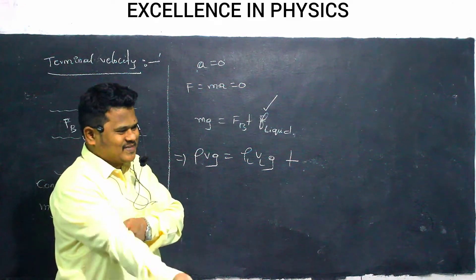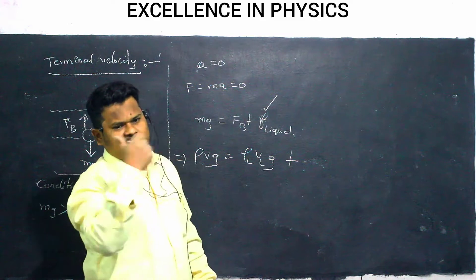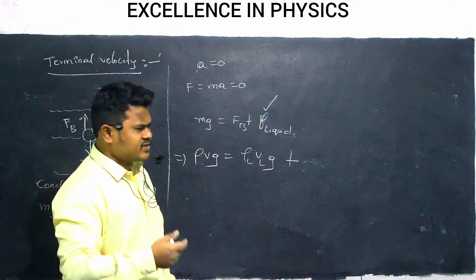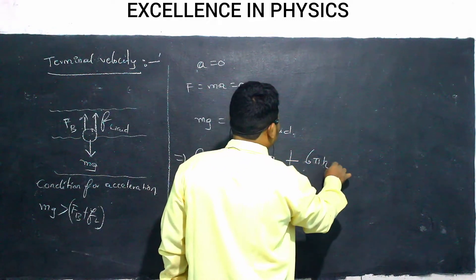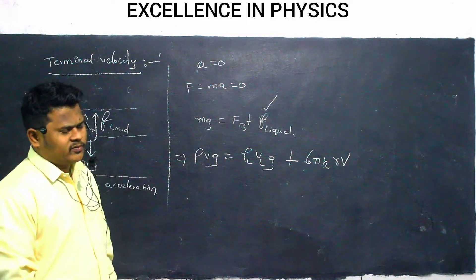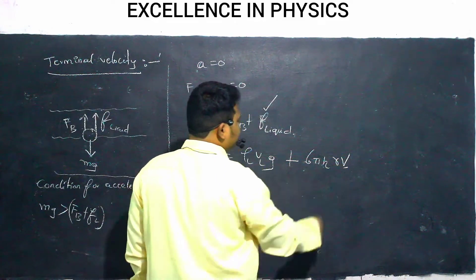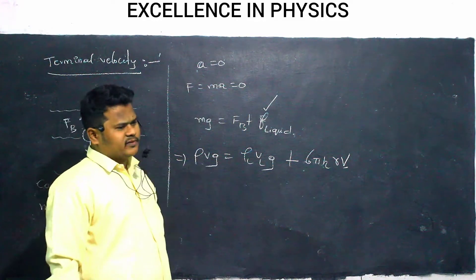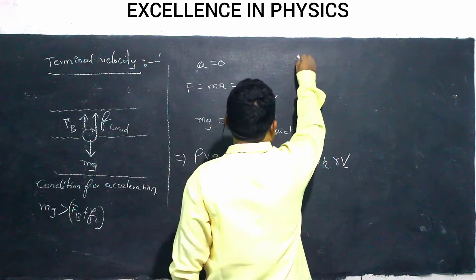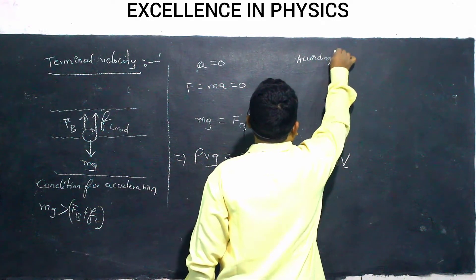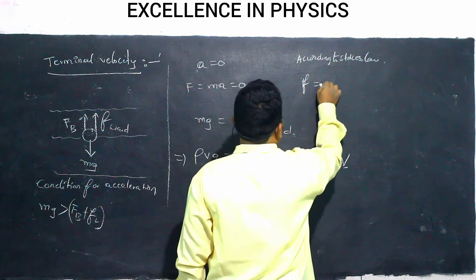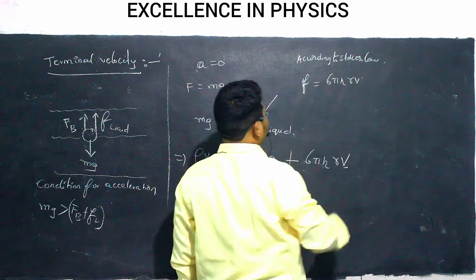Stokes' law tells us that if a body is traveling inside any fluid, it will experience an opposing frictional force. The equation for Stokes' law is 6πηrv — where η is the coefficient of viscosity, r is the radius, and v is the velocity of the body. So frictional force due to any fluid equals 6πηrv.